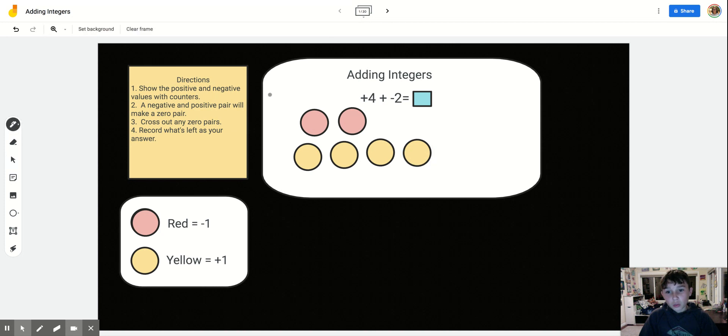So we have two zero pairs right here. One zero pair, two zero pairs. Zero pairs are when two numbers cross each other out, like this red and this yellow, and this red and this yellow.